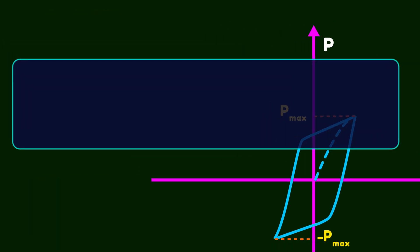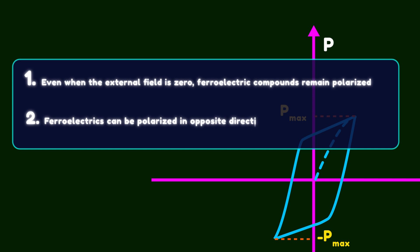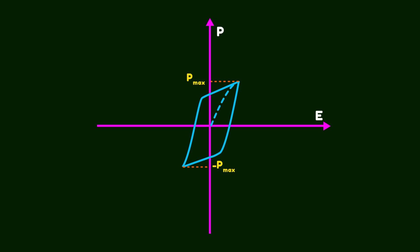There are two key results from this diagram. First, even when the external field is zero, ferroelectric compounds remain polarized. This is the hysteresis effect. Second, ferroelectrics can be polarized in opposite directions, depending on the applied field.